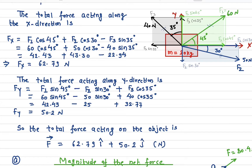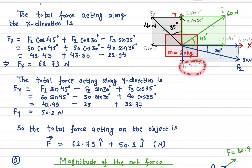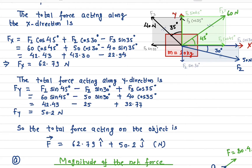Now let's find the total force along the y-axis. Along the y-axis we have: F1 sine 45° + F3 cosine 35° − F2 sine 30°. F2 sine 30° is negative because it acts along the negative y-direction. Plugging in all the numbers, the net y-force Fy = 50.2 N.